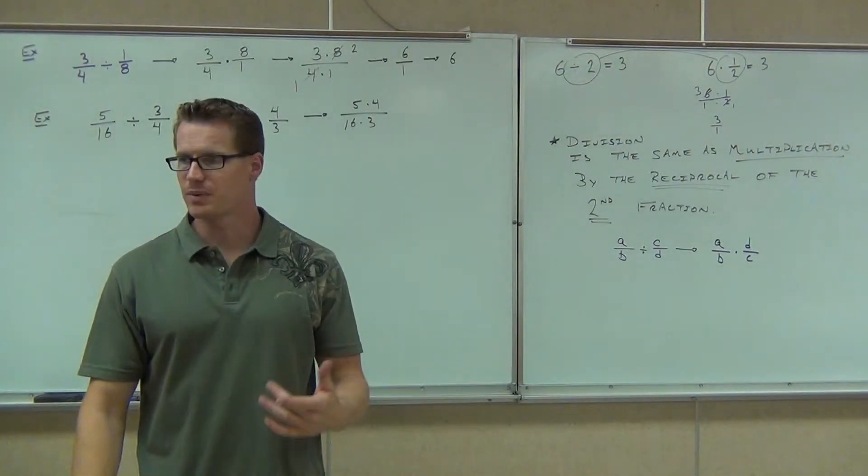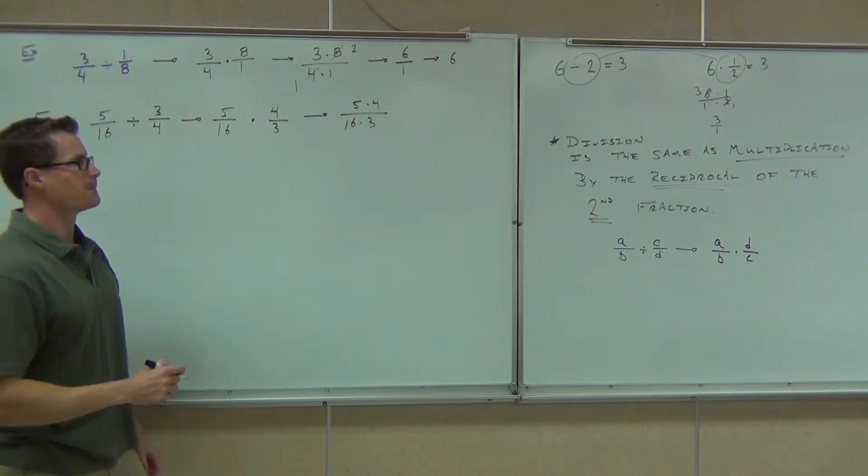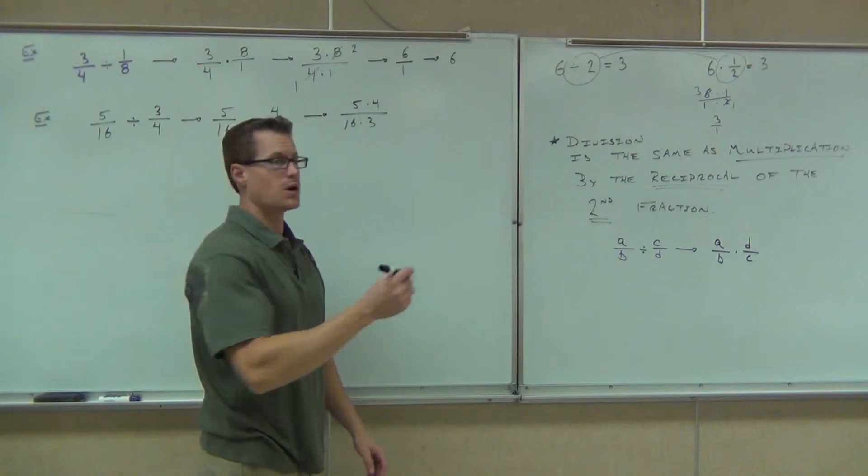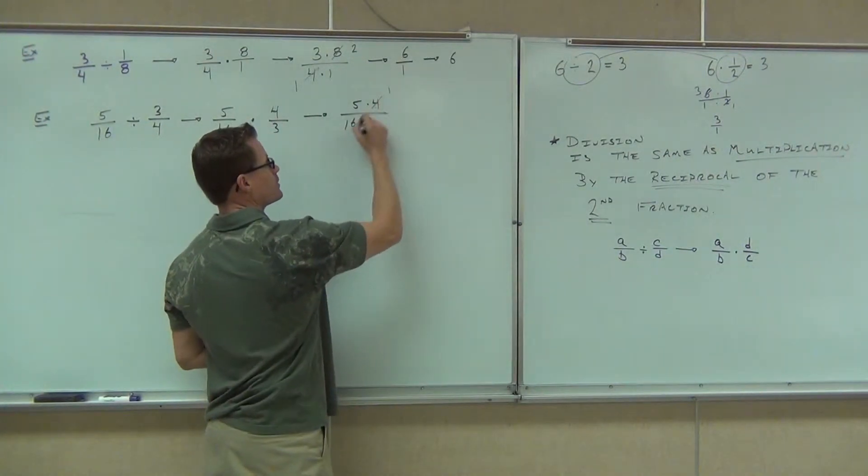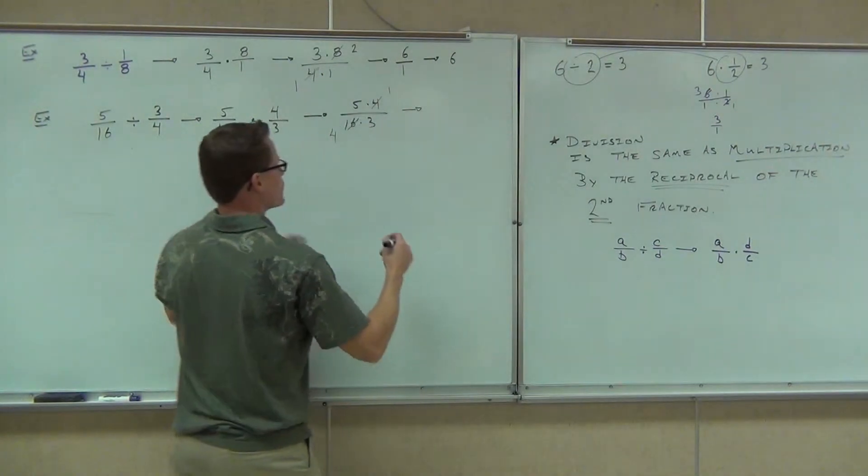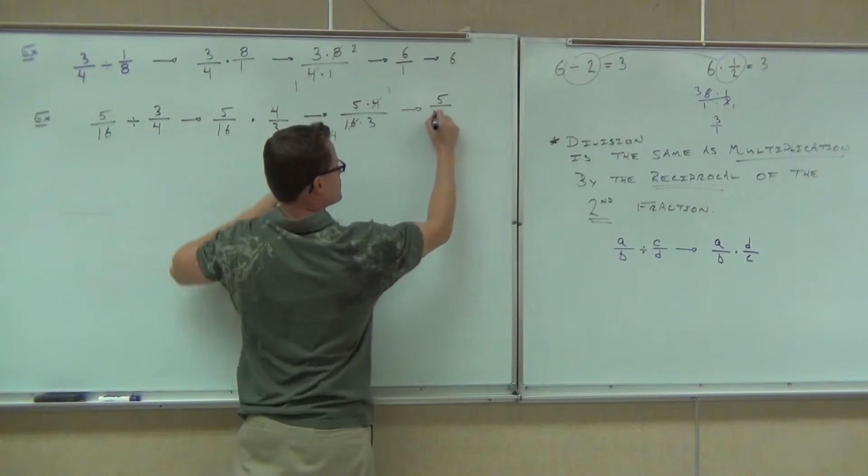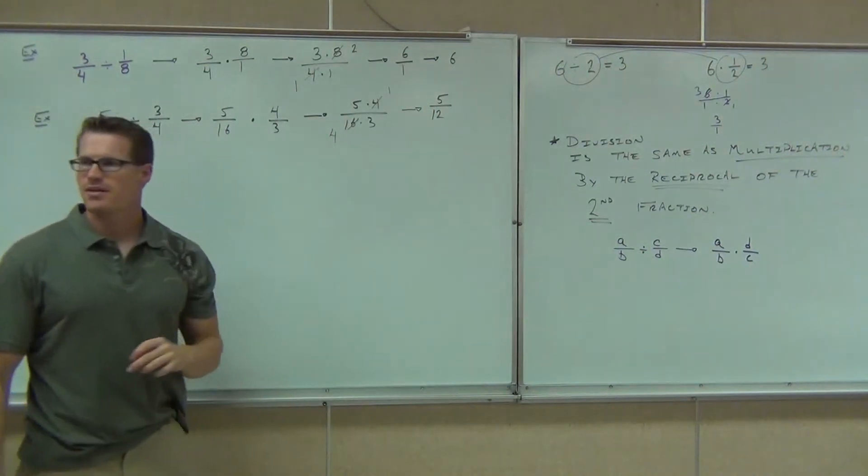Now's the point where we simplify. We'll have our five times four. We'll have our sixteen times three. You can just extend the line if you'd like. Just make sure you're only doing that with multiplication. And now we get to simplify. What do we simplify here? Four and sixteen. Good. On the top we get a one. Bottom we get a four. Is there anything else? No. So I'm going to have five times one, five. I'm going to have four times three. You can't simplify that. You're done.